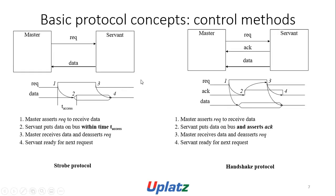Basic protocol control methods — Strobe protocol: master asserts request to receive data; servant puts data on the bus within time t-access; master receives data and de-asserts request; servant is ready for next request. Handshake protocol: master asserts request to receive data; servant puts data on the bus and asserts acknowledgement; master receives data and de-asserts request; servant de-asserts acknowledgement and data; servant is ready for next request.